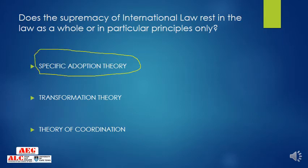Transformation theory says that the law was already there; what we have done is transform our existing law to incorporate the new principles and ideology from the international level. So in specific adoption there was no prior municipal law and we adopted it; in transformation the law already existed and we transformed it to cater to the needs of the international system.